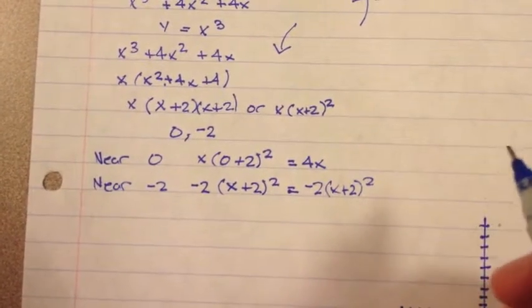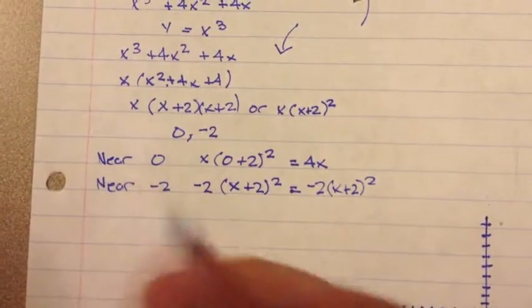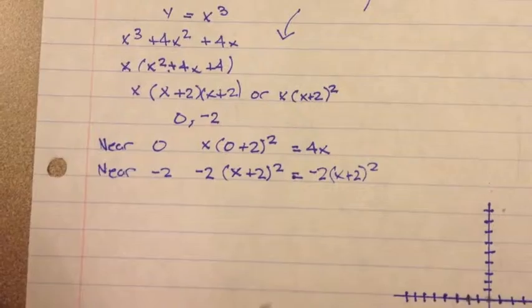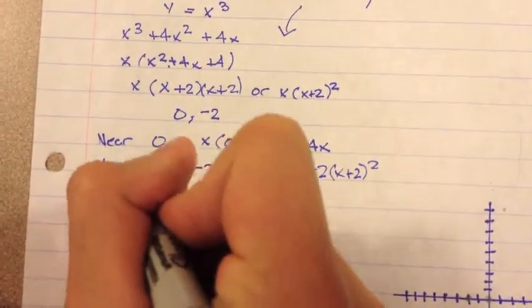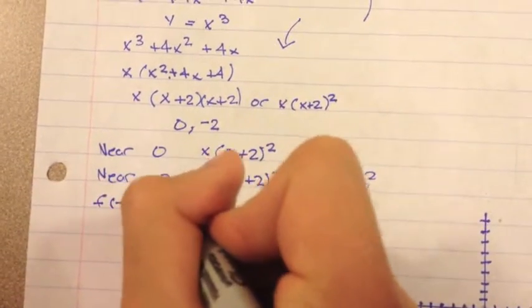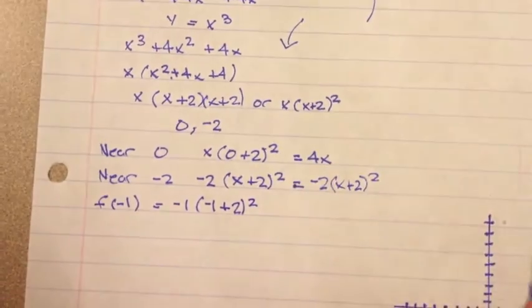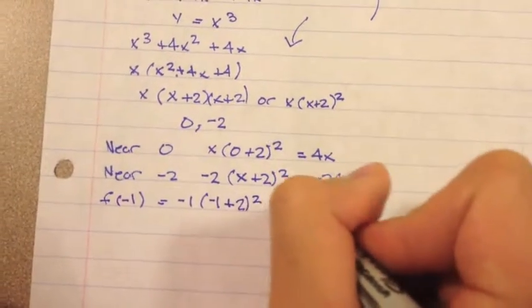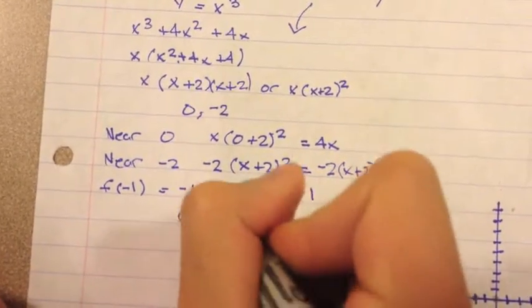And then, now we have to find a point between the zeros, and I'm going to use negative 1. To do this, you plug in negative 1 into the equation: negative 1 times negative 1 plus 2 squared, and that's going to equal negative 1. So, one of our points on the graph will be negative 1, negative 1.